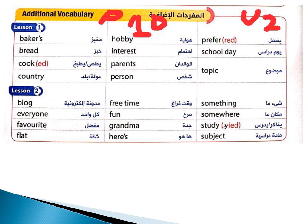بيرسن - شخص. بريفير - يفضل. سكول دي - يوم دراسي. توبيك وسبجيكت - موضوع. بلوغ - مدونة إلكترونية، يعني زي أي حد أعمل مدونة على الإنترنت ومسميها باسم معين. كل واحد مفضل.